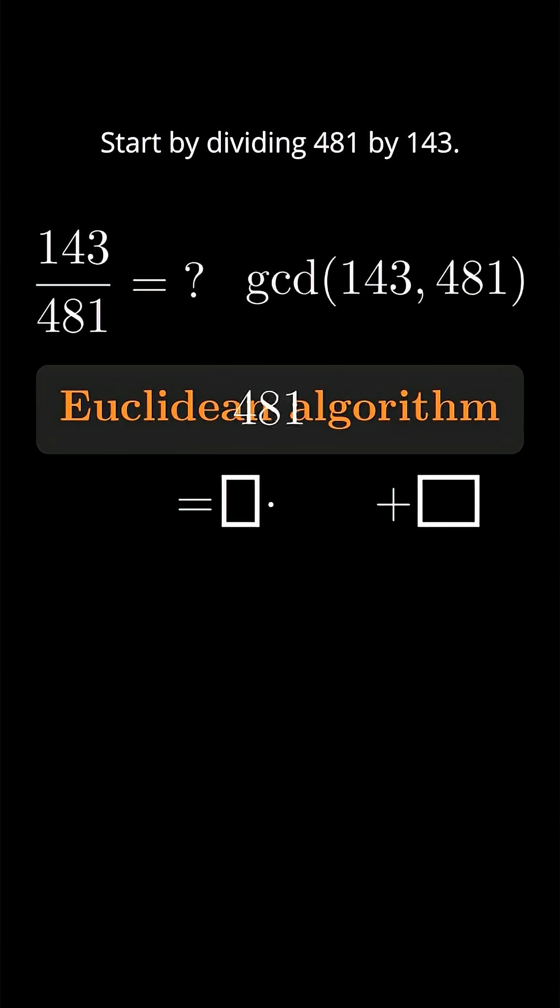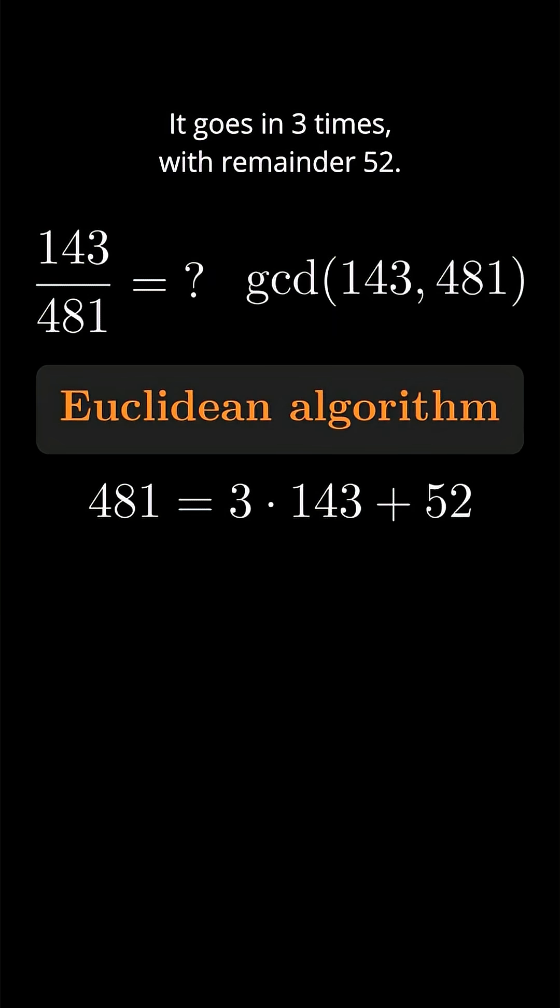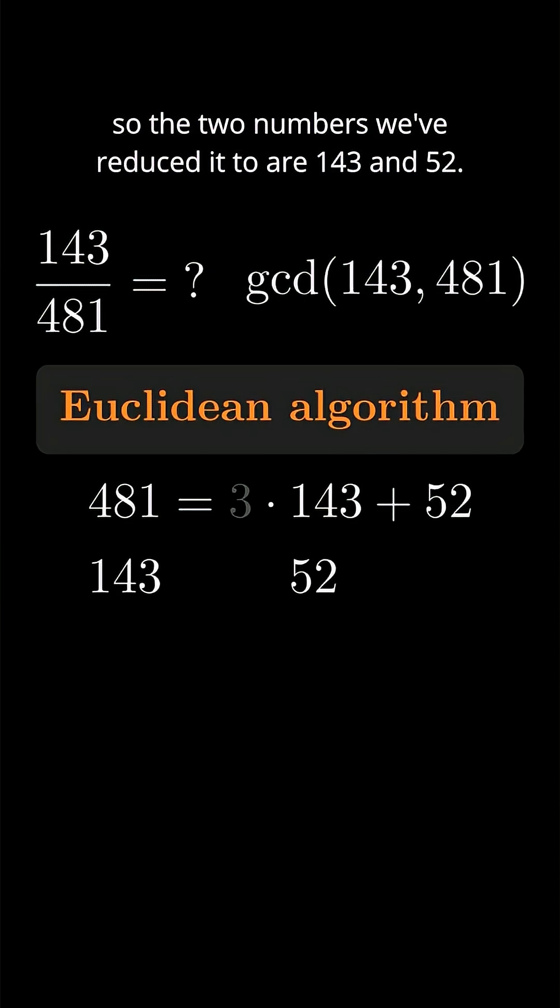Start by dividing 481 by 143. It goes in 3 times with remainder 52. We don't care about the quotient 3. So the two numbers we've reduced it to are 143 and 52.